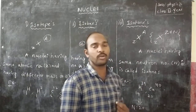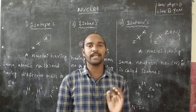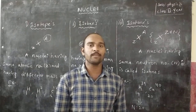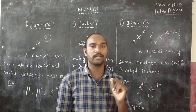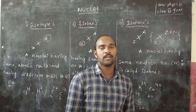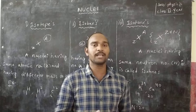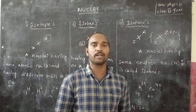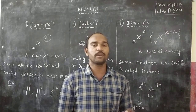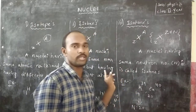The last category is isomers. A nucleus having the same proton number, neutron number, and mass number, but different physical properties, is called an isomer. In isomers, the physical properties are different even though the mass number and atomic number are the same.